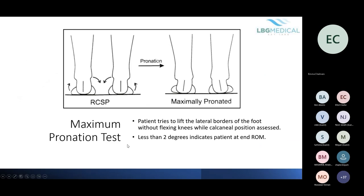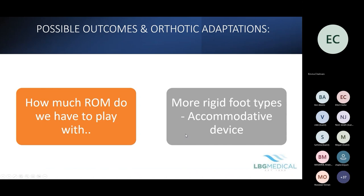The maximum pronation test: get the patient to stand in their relaxed position and ask them to pronate their foot further, seeing how much range of motion there is to play with — make sure they don't move their knees, just their ankles. You might find that someone who looks relatively neutral actually cannot pronate any further, meaning they also have a lot of stiffness and can't supinate further either.